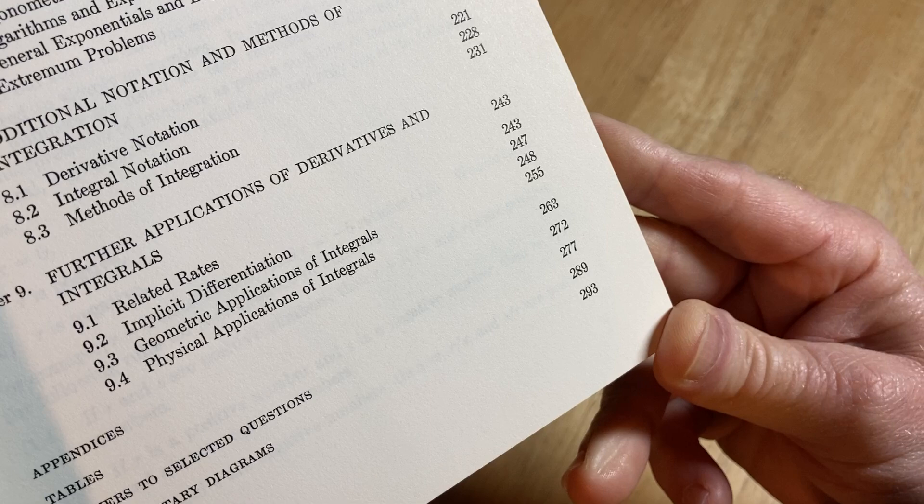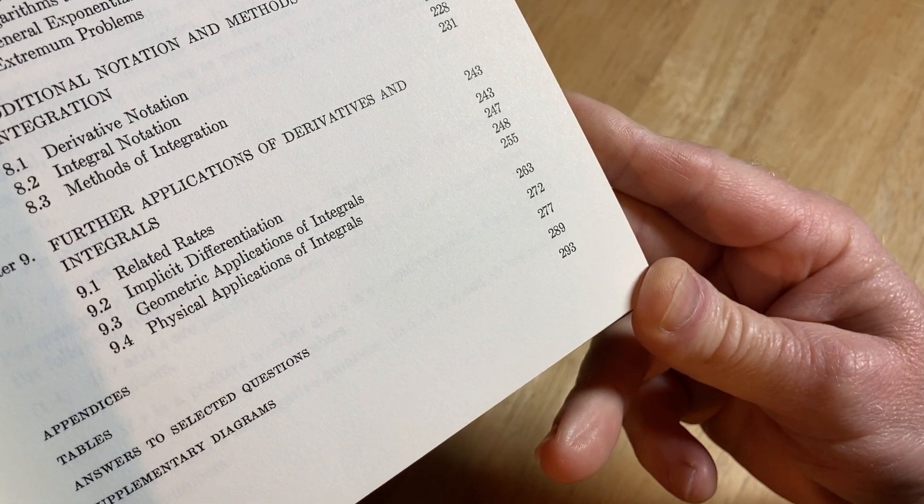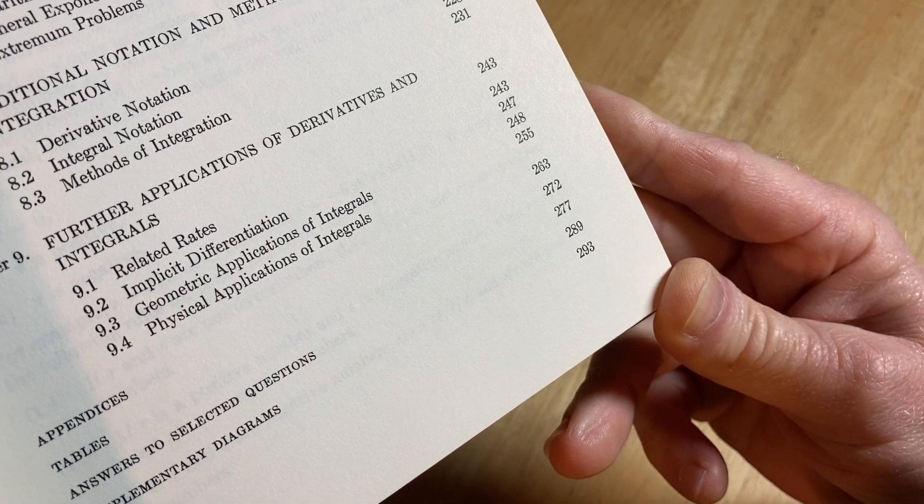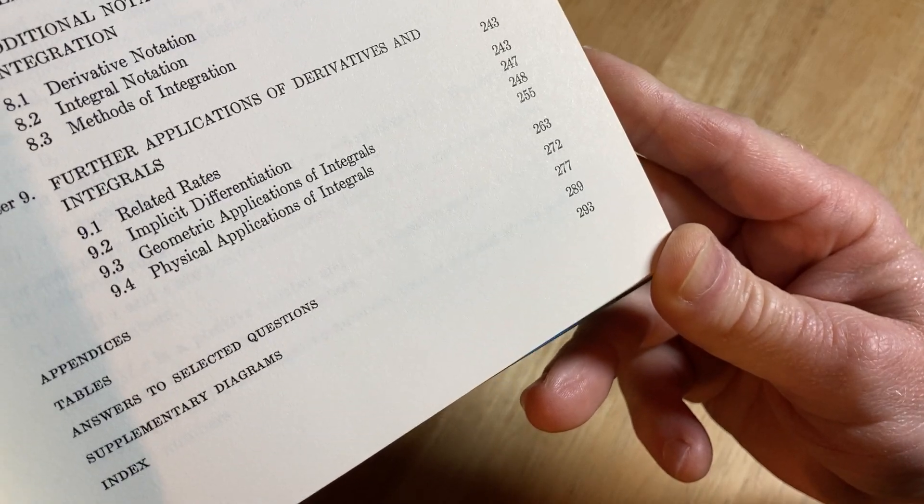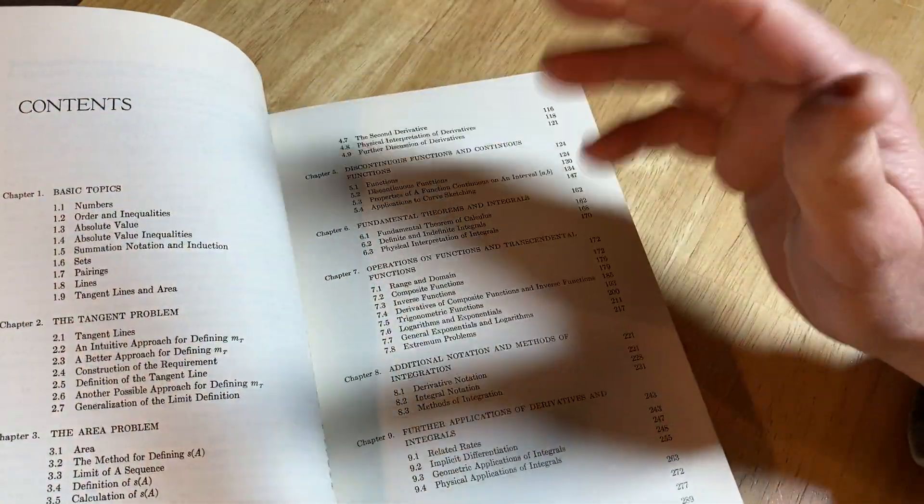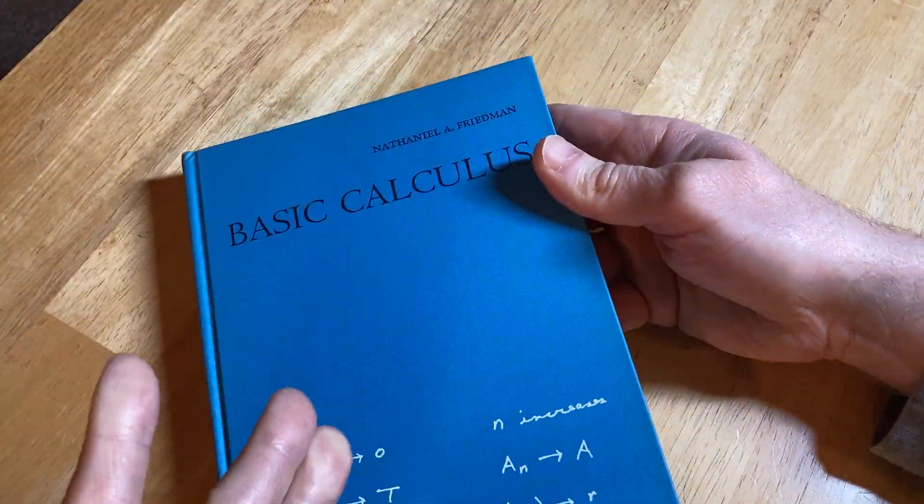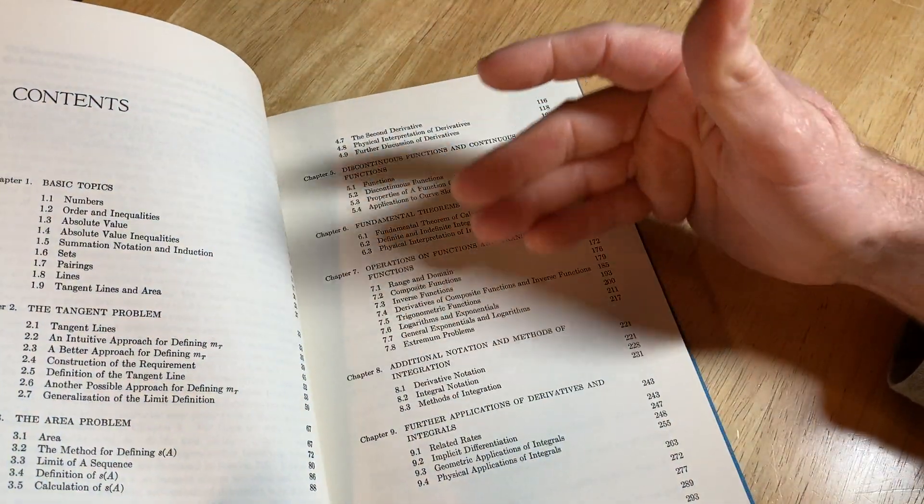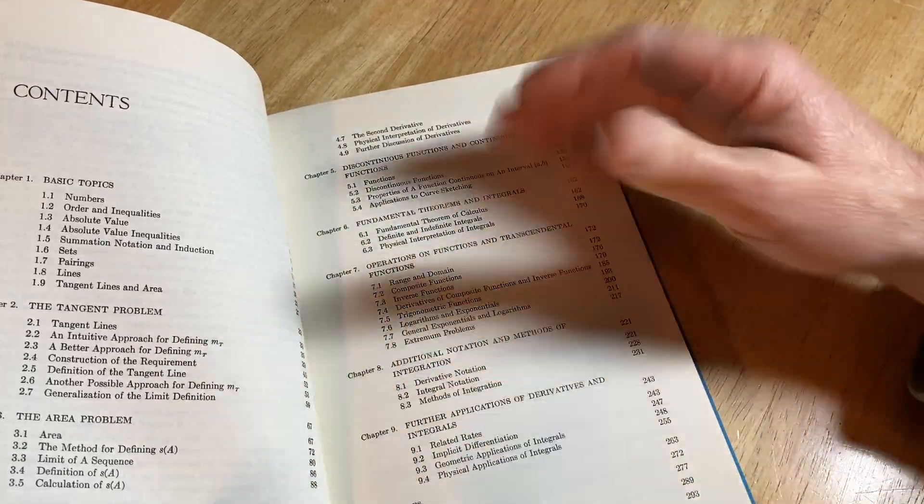Further Application of Derivatives and Intervals Related Rates. Implicit Differentiation and then some other applications. But that's it. And then Answers to Selected Questions. The book doesn't keep going. There's no more. So, it really is basic calculus. There's a lot of stuff that is not here.